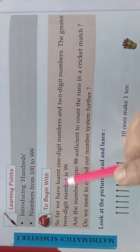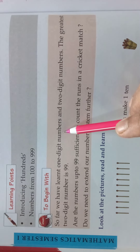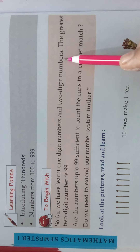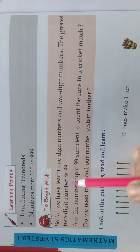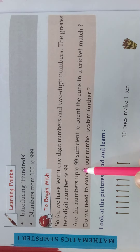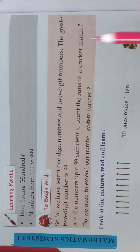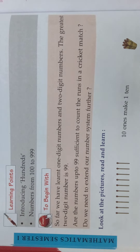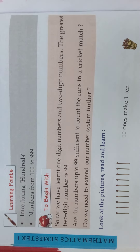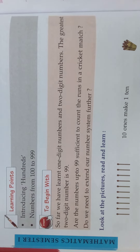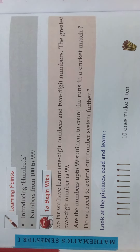So far we have learnt 1 digit numbers, that is single digit numbers, and 2 digit numbers. The greatest 2 digit number is 99. Are the numbers up to 99 sufficient to count the runs in a cricket match? In a cricket match the score may be 200 or something like that. So we want to learn those numbers also. What is 100, 200, 300? Come, we will extend our number system further.